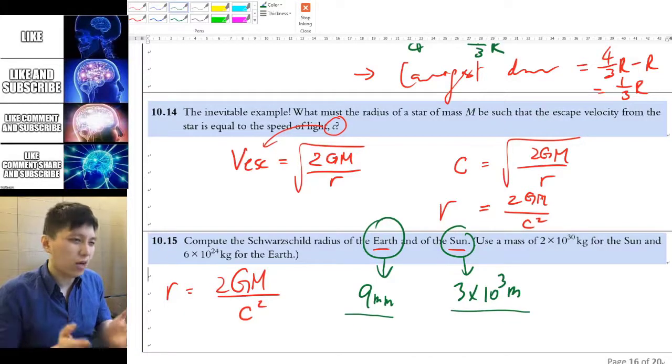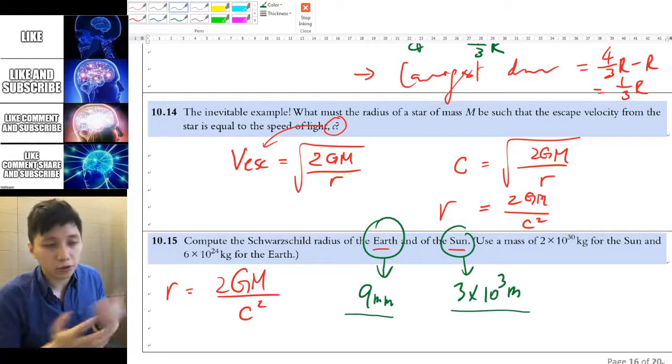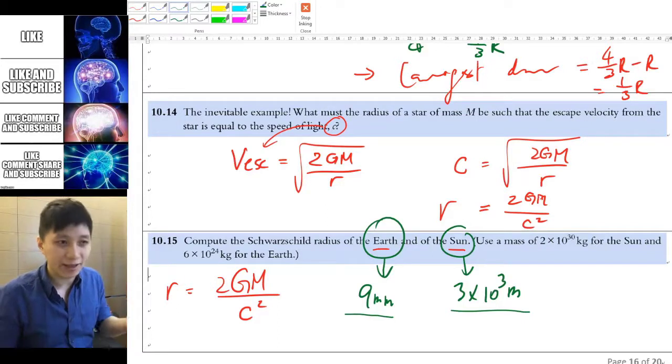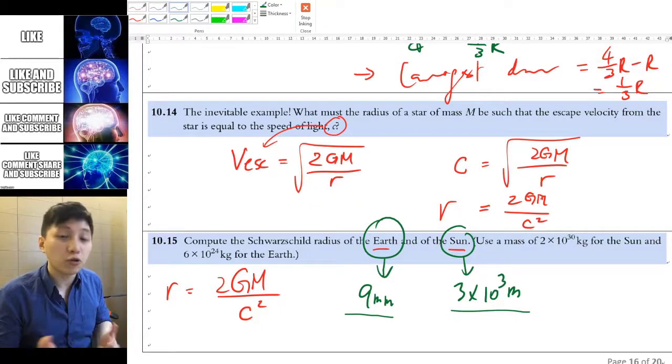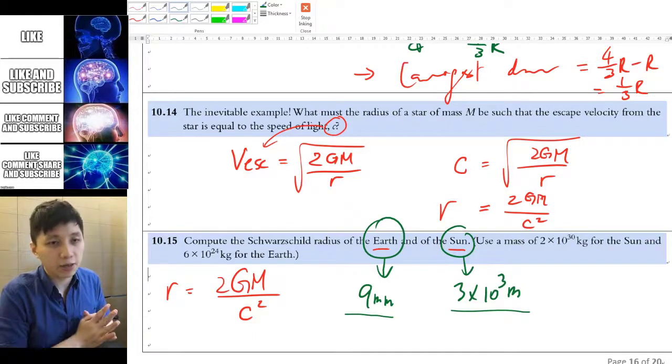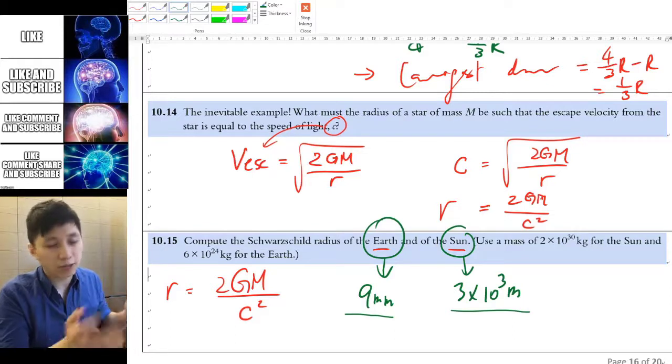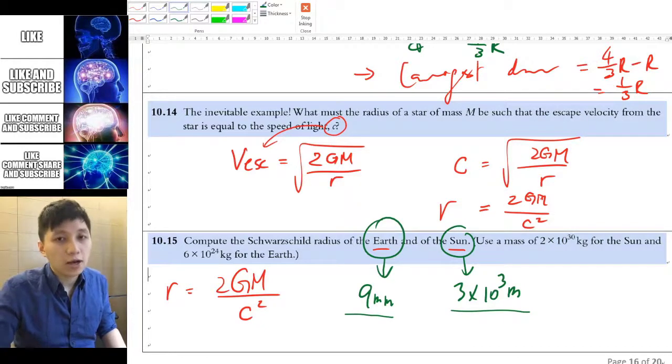So you may be wondering, what's the importance of understanding this equation for us to learn about science? Since we can't really change the size of the earth or the sun anyway, so why do we bother? The idea is that in the future you may be studying astronomy, then this equation will come in hand. Because using this, we can know whether or not a star or a planet can develop into a black hole. So hopefully we have a chance to talk about that in the future. I'll see you again in the next video. Bye.